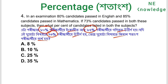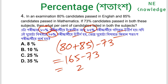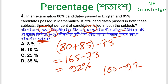To solve this, we recall: 85% plus 73% equals 158%. Then 158 minus 100 equals 58% pass at least one subject... actually 85 plus 73 minus 73 equals 85. So 100 minus 92 equals 8%. Option 8 — this is the correct answer.